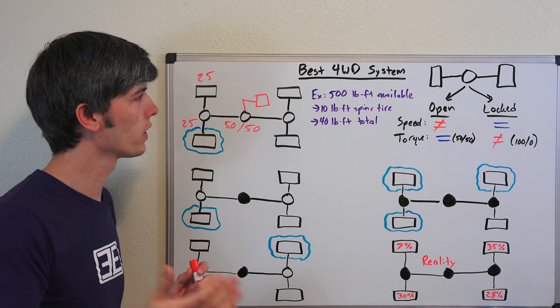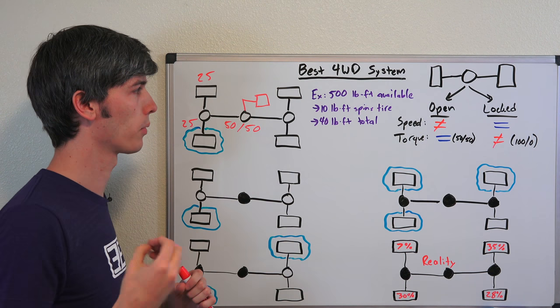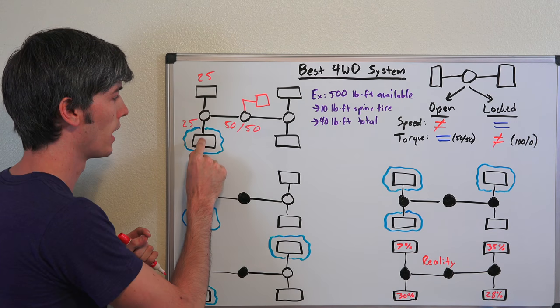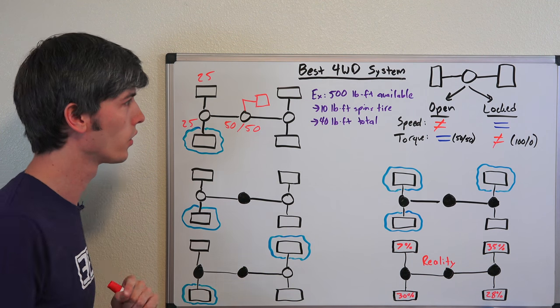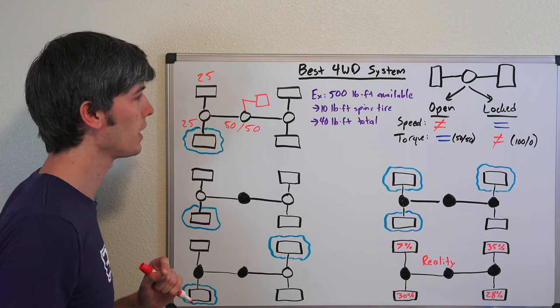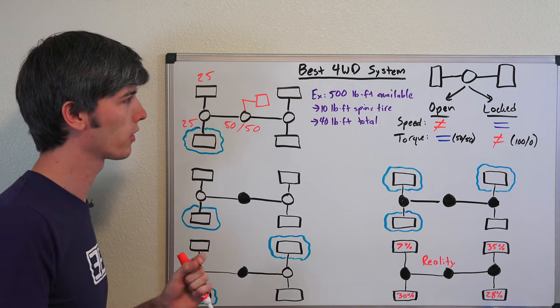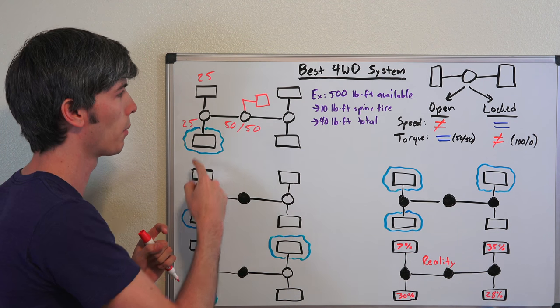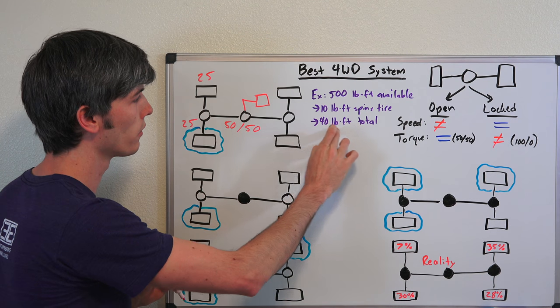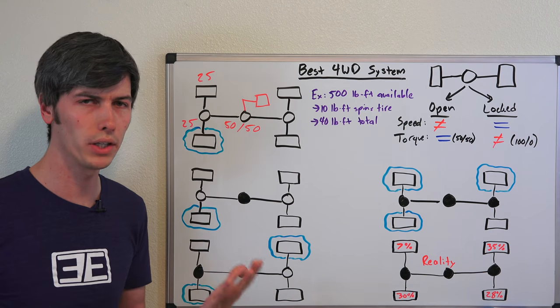And so because one of these tires is on ice, let's say your vehicle has 500 pound-feet of available torque that the engine can produce. But let's say it only requires 10 pound-feet in order to spin up a tire that's on ice. Well, because that tire that's on ice can spin up with 10 pound-feet, that limits every other individual tire because of these open differentials to a maximum of 10 pound-feet—they all get the same amount. So total torque that you can put down in this scenario is only 40 pound-feet because you have an open differential. And so what do you do?